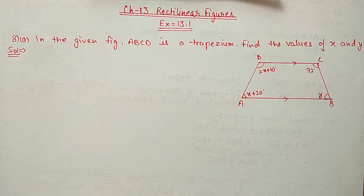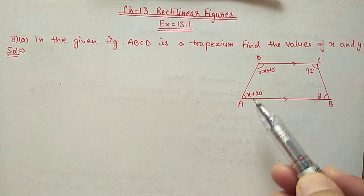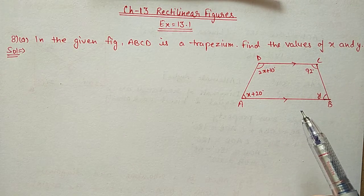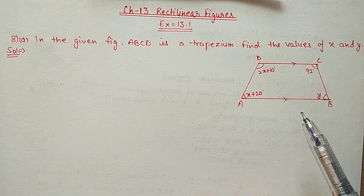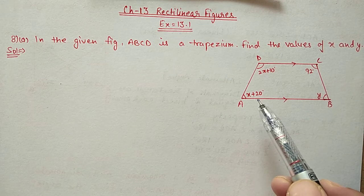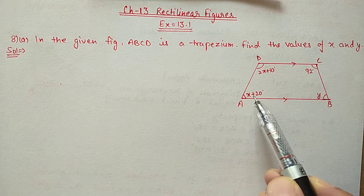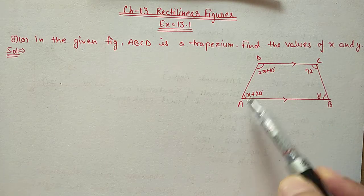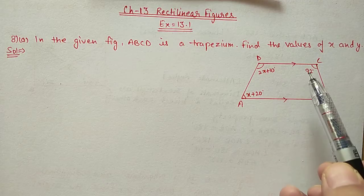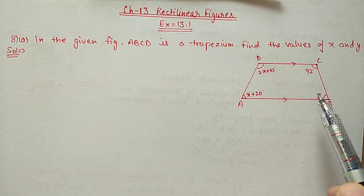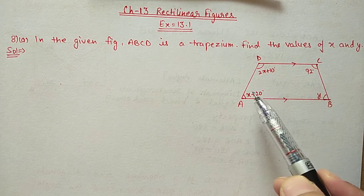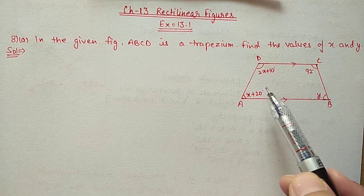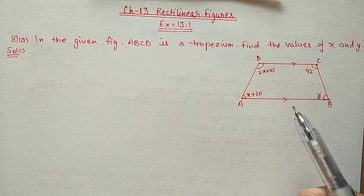Here a trapezium is given and these two angles are given. We have to use the trapezium property. In a trapezium, the sum of co-interior angles is 180 degrees. Co-interior angles means these two are the parallel lines and this is the transversal, then these two will be co-interior angles. We will use this property to find out the value of X and Y.